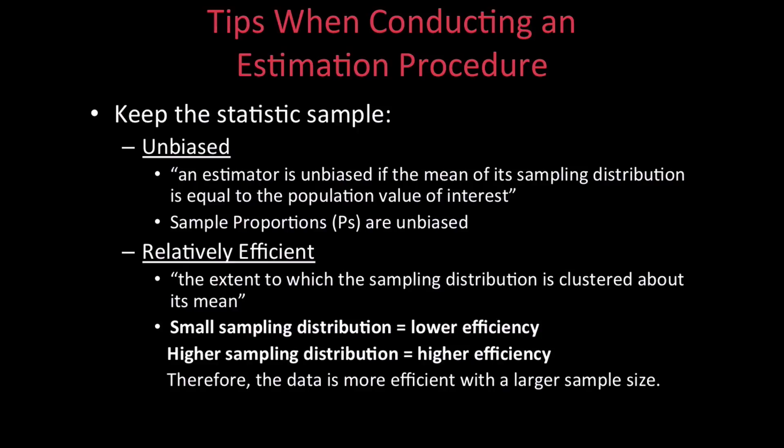When conducting this type of sample, it is important to make sure that the sample is unbiased and has effective distribution. An estimator is unbiased if the mean of its sampling distribution is equivalent to the population value in question. For example, sample proportions (PS) are unbiased. Having unbiased means in sample proportion allows us to determine the probability that they lie within a given distance of the values we are trying to estimate.